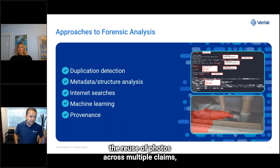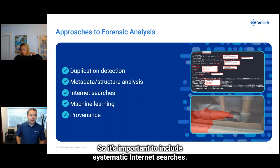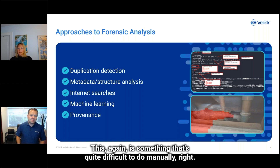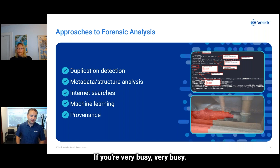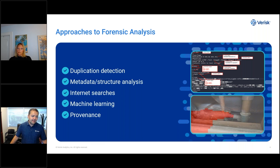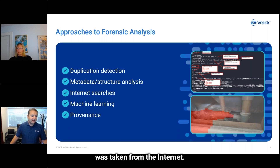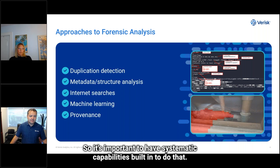Very similar to the reuse of photos across multiple claims, we can find the use of photos from the internet within a claim. So it's important to include systematic internet searches. This is something that's quite difficult to do manually — if you're a very busy claims adjuster who's got five or six or more claims to get to today, it's very difficult to go out online and try to find out if a photo was taken from the internet. So it's important to have systematic capabilities built in to do that.